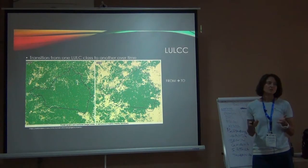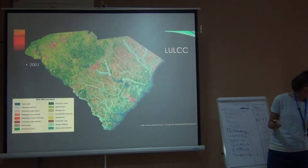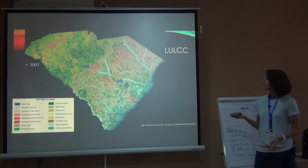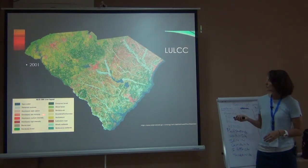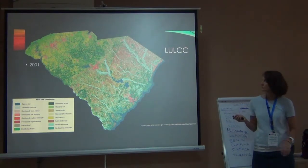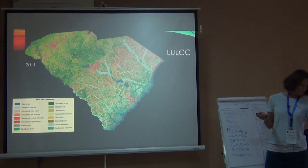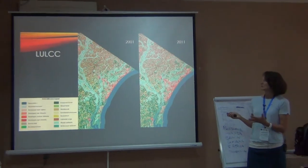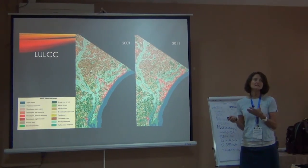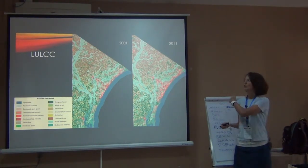In my case I'm really interested in mapping where that change occurs. Here's a quick example: this is the state of South Carolina on the east coast of the United States. Developed land is shown in red hues, forest is green, and here are coastal areas and rivers. This is for 2001, and then this is for 2011. Zooming in on this city, you can visually and qualitatively say there's an increase in urbanization — there's more built-up land over this decade.